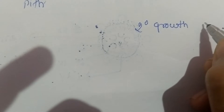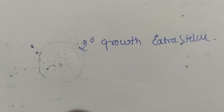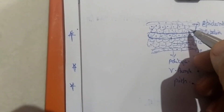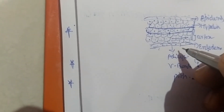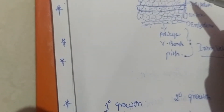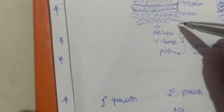We will be discussing secondary growth in the extrastele region. We have seen how exactly secondary growth takes place in the intrastele region. If we consider a rough sketch of a dicot stem, the uppermost layer is epidermis, followed by hypodermis and the cortical region. Inner to the cortical region is the endodermis, which differentiates between the stele and extrastele regions. Below the endodermis we have pericycle, vascular bundle, and pith — all together constituting the intrastele region.